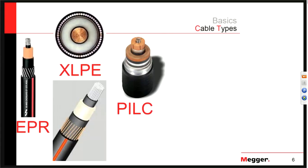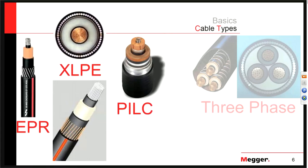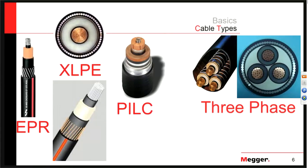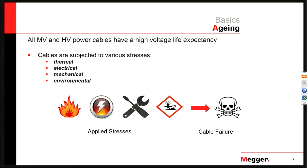These cables can come in single phase or many different types of three-phase varieties. All cables have some kind of life — you'll often hear terms of 30 to 40 years as an expected life. Things like thermal stress, electrical stress, mechanical stress, and environmental stress can all reduce the life expectancy of a cable.